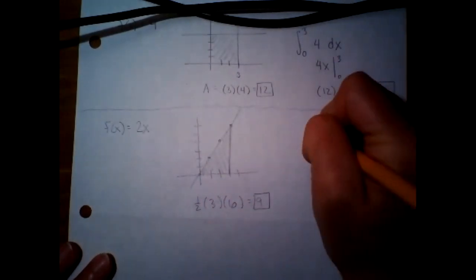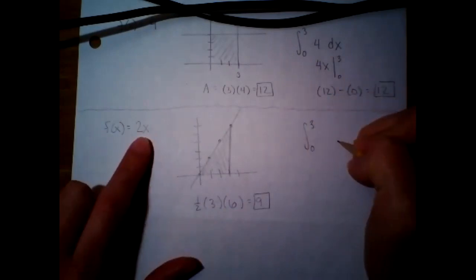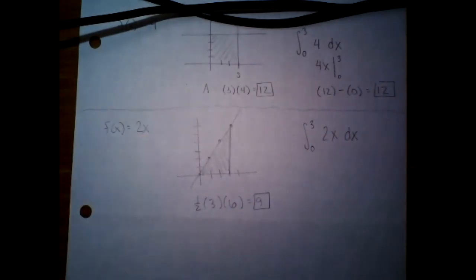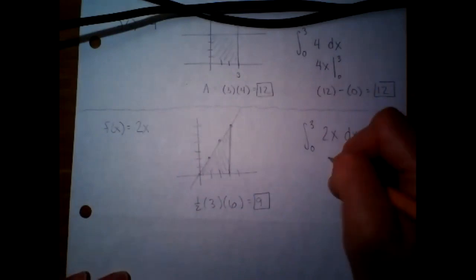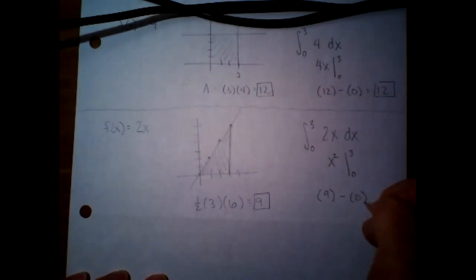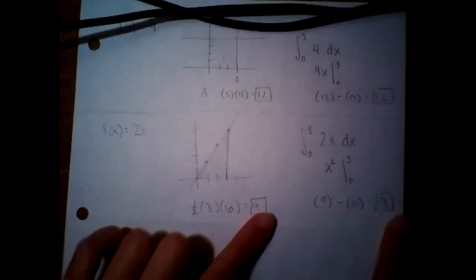All right. Now let's do this using calculus. It's going to be integral zero to three of this function. What is the antiderivative of two x? Good. It is x squared. Such that zero to three. And if you do upper boundary minus lower boundary, oh my gosh, you get the same answer.